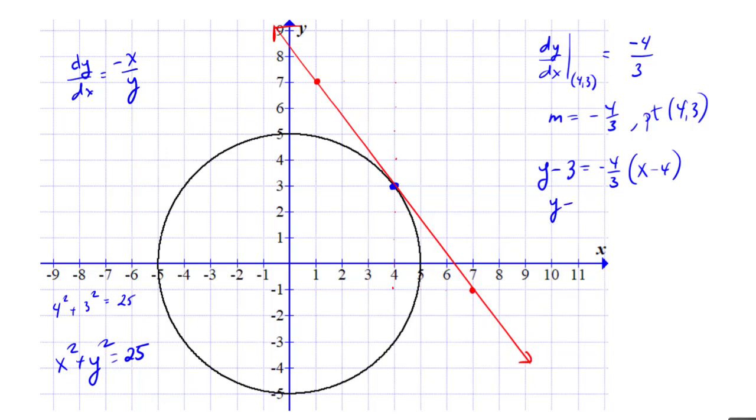So y - 3 = -4/3·x + 16/3, which gives y = -4/3·x + 9/3 + 16/3, so y = -4/3·x + 25/3. There is the tangent line at that point. Everything is working out like before. We still found the derivative, it's still the same thing, but we just found it in a different way and expressed it a little bit differently.